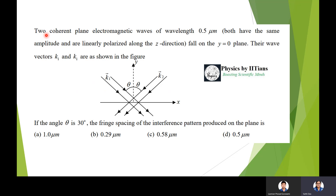The first question: two coherent plane electromagnetic waves of wavelength 0.5 micrometers both have the same amplitude and are linearly polarized along the z direction. They fall on the y equals zero plane. Their wave vectors k1 and k2 are as shown in the figure. If the angle of incidence theta is 30 degrees, the fringe spacing of the interference pattern produced on the plane is: 1.0 μm, 0.29 μm, 0.58 μm, or 0.5 μm?